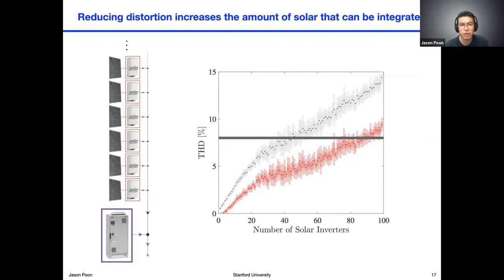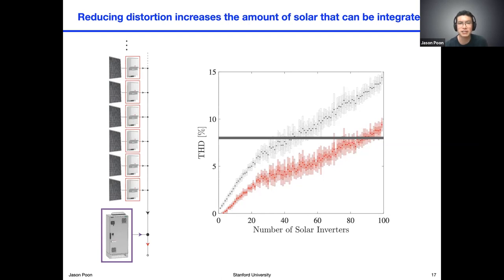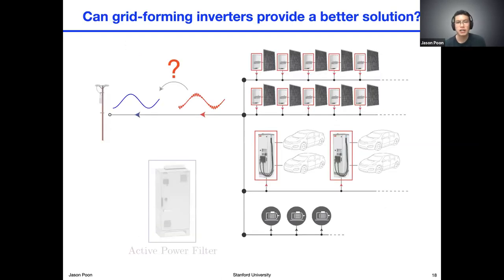It does work, though. If we add in this active power filter to our simulation, the distortion has been reduced quite significantly — reduced to the point where we don't cross the 8% limit until about 80 or so inverters. So we've effectively doubled the amount of solar that we can integrate into this example network with the introduction of this active power filter.